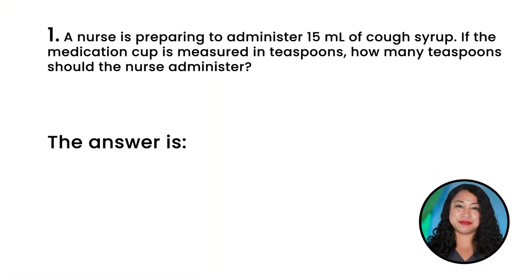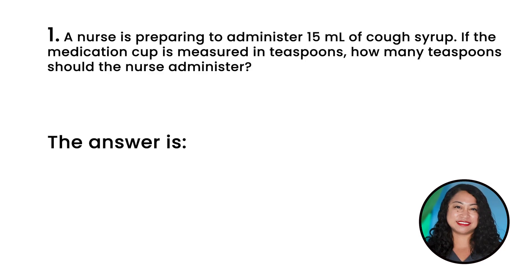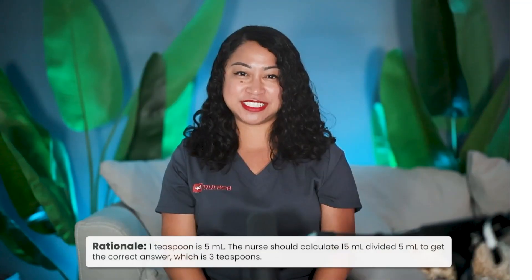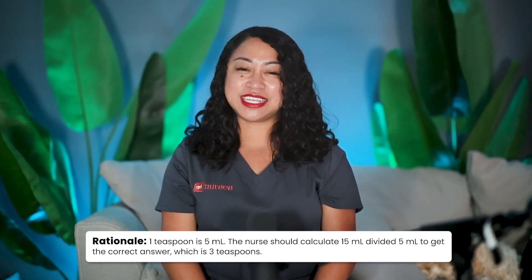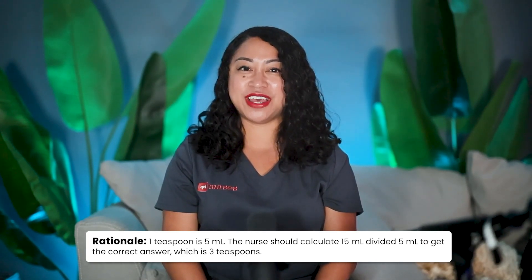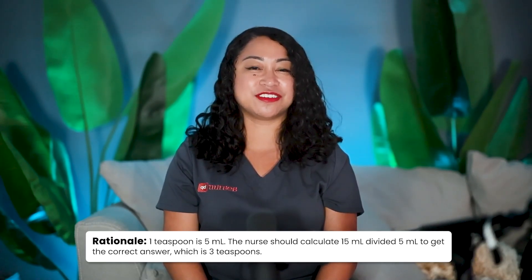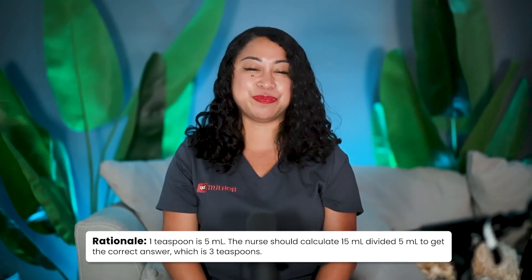Question 1: A nurse is preparing to administer 15 milliliters of cough syrup. If the medication cup is measured in teaspoons, how many teaspoons should the nurse administer? The correct answer is 3 teaspoons. Rationale: 1 teaspoon is 5 milliliters. Divide 15 milliliters by 5 milliliters to get 3 teaspoons.